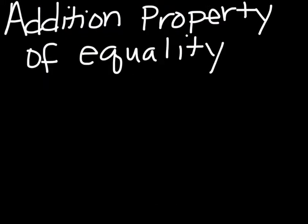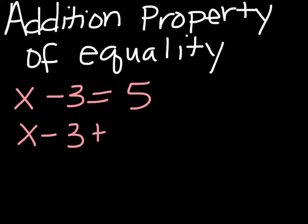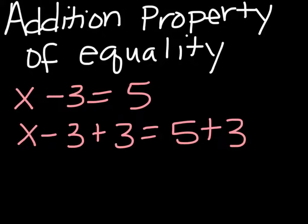We've learned to use subtraction to make equivalent equations. Now let's use addition. Adding the same number to each side of an equation produces an equivalent equation. For example, if x minus 3 equals 5, then x minus 3 plus 3 equals 5 plus 3. And when we simplify, we get x equals 8.